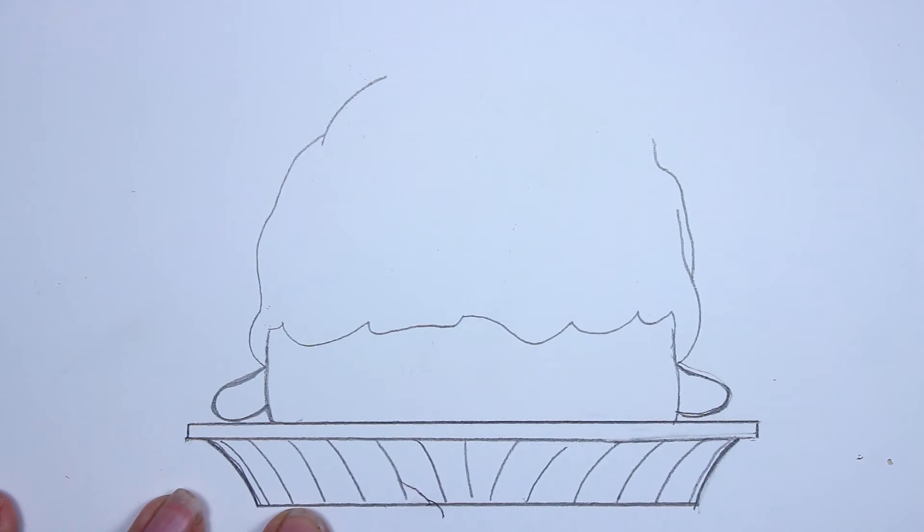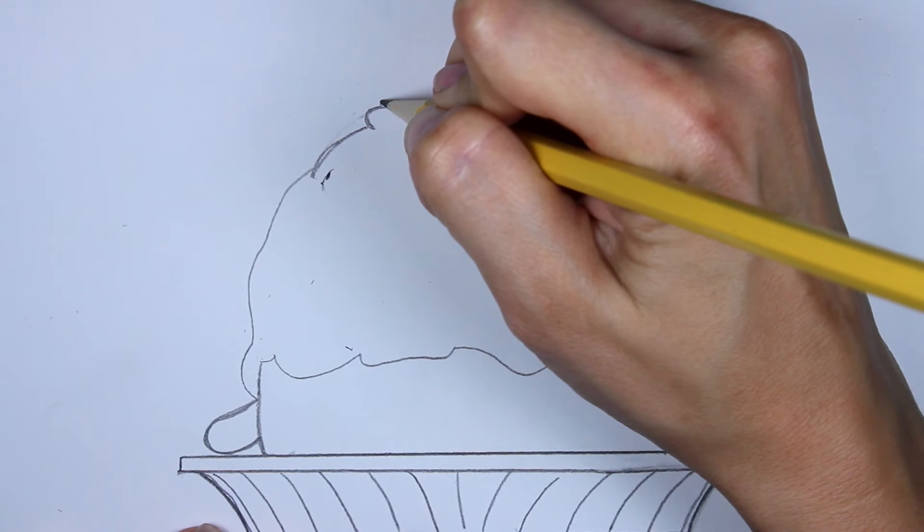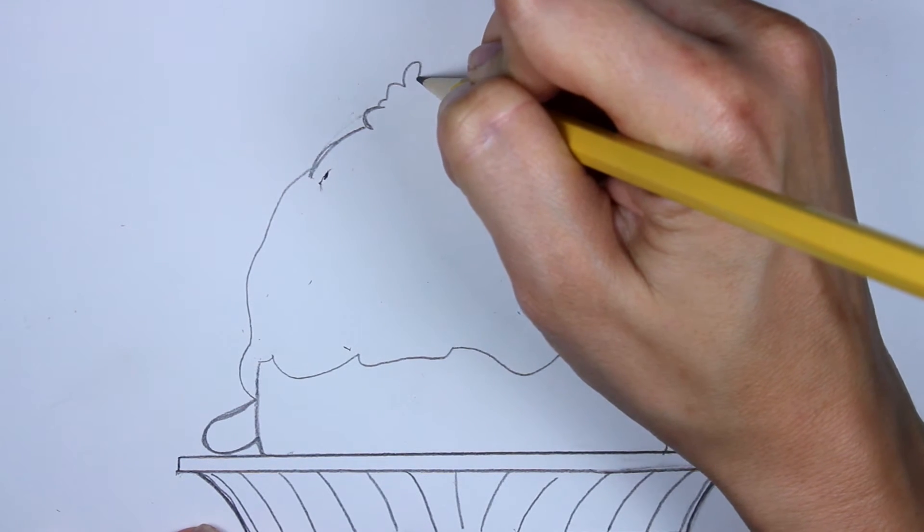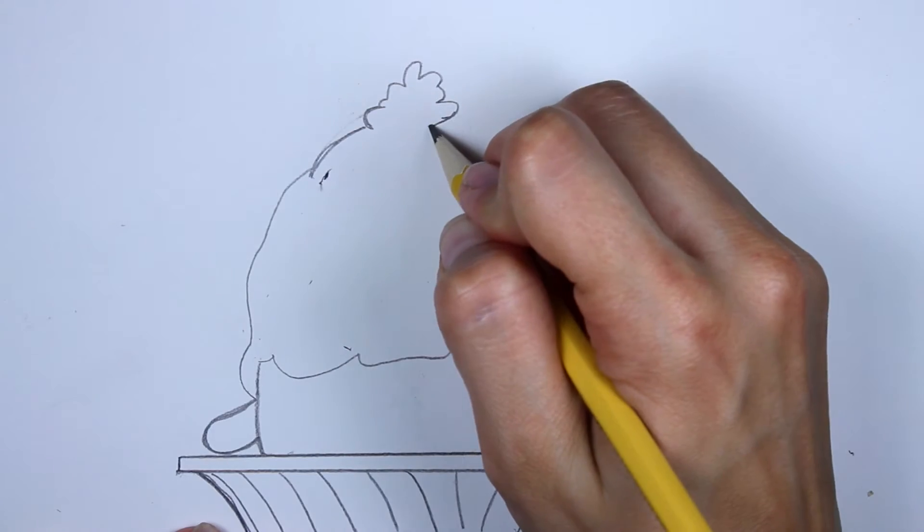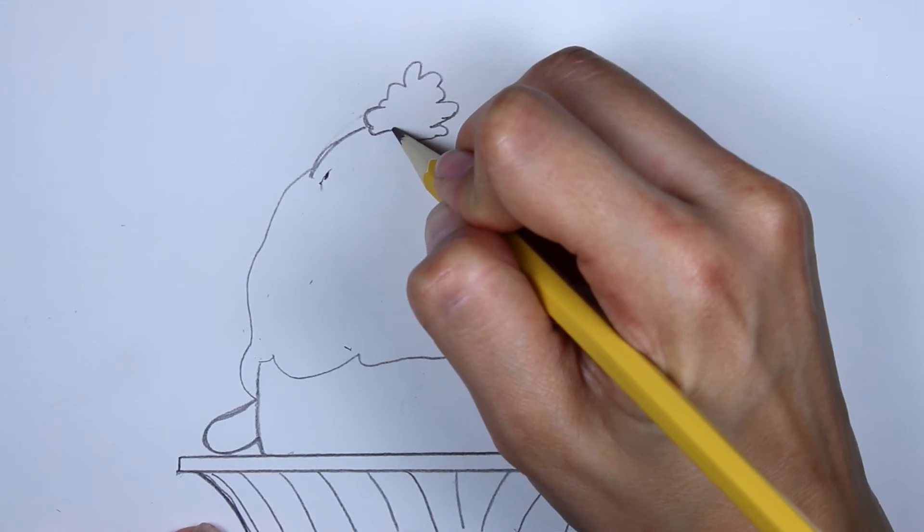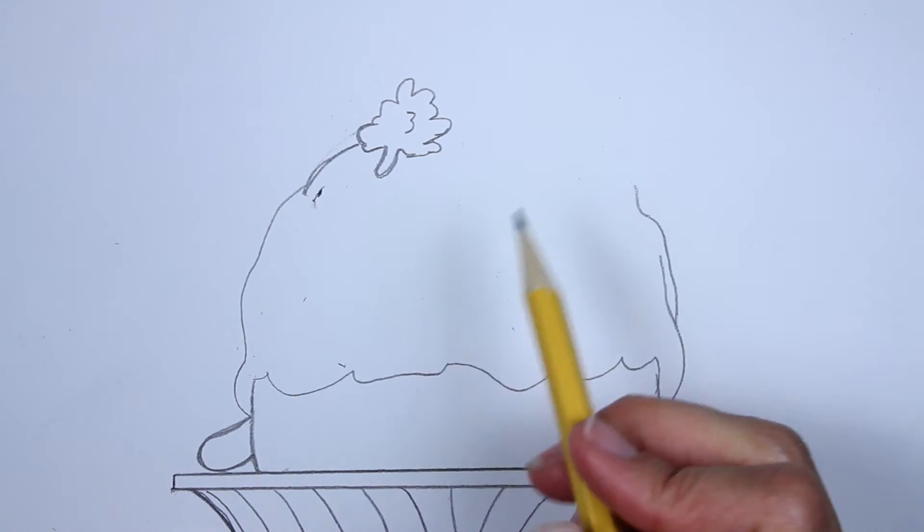And then at the top, he has a thing of melted butter dripping, and a little leaf thing here garnishing him. So I'm going to draw that leaf right now. That's what I'm doing. I'm making these little bumps here, like this. And then make one little stem over here at the bottom, and then a little detail inside.